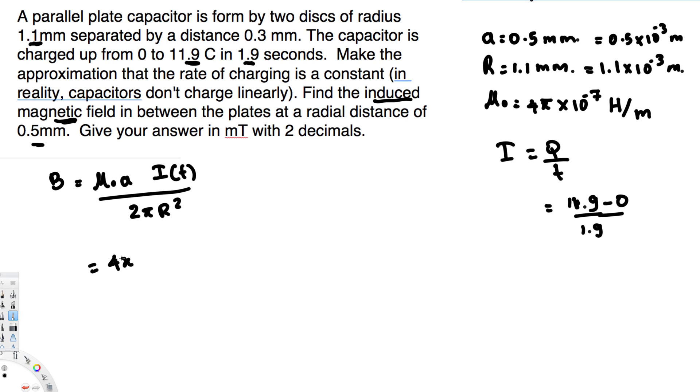If you plug this one, this is going to be 4 pi times 10 to the power of minus 7 and the a value is this 0.5 times 10 to the power of minus 3, and instead of current we plug this one 11.9 over 1.9, so 11.9 divided by 1.9, and here we are going to have 2 pi r square. r is going to be 1.1 times 10 to the power of minus 3.